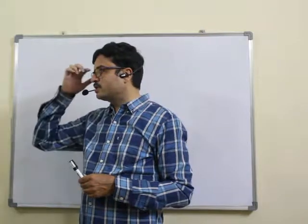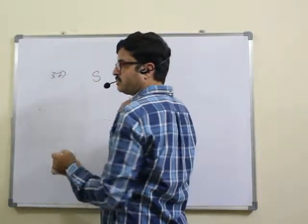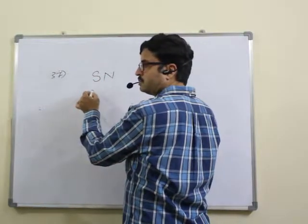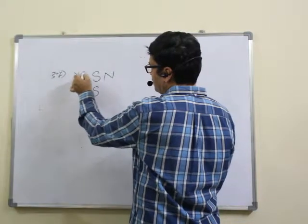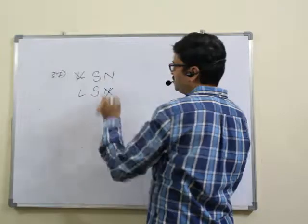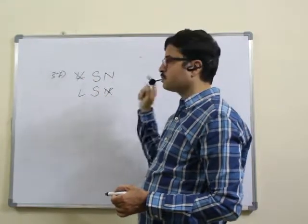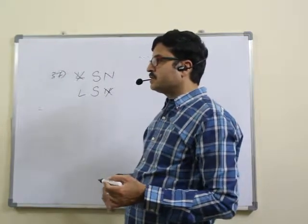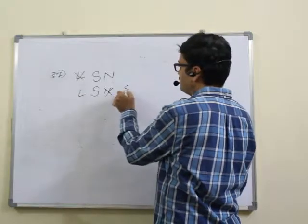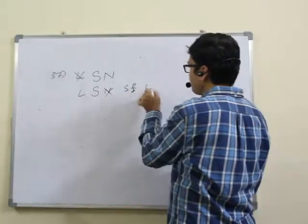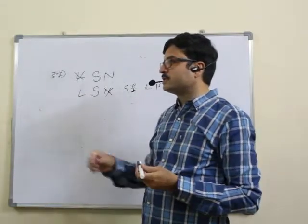Question 37: how many such symbols are there in the arrangement where each is either immediately followed by a number or preceded by a letter, but not both? If a number follows the symbol, a letter should not precede it, and vice versa. Looking for letter-symbol combinations: we get S (sterling), then L (beta), then D (copyright) — three symbols qualify. Answer: 37, fourth option.